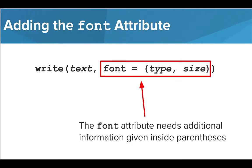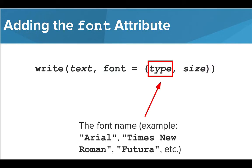Adding the font parameter will allow us to change both the size and style of the font used to create the label. We need to include this information inside a set of parentheses where each item is separated by a comma. The type of font or font name comes first. This name is written inside quotation marks.